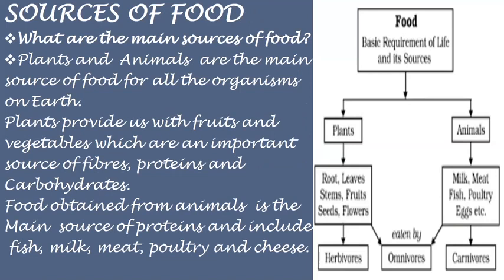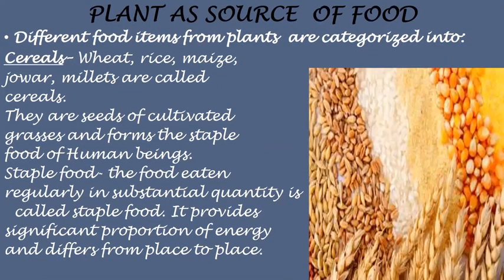What are the main sources of food? Plants and animals are the main sources of food for all organisms on the earth. Plants provide us with fruits and vegetables, which are an important source of fibers, proteins, and carbohydrates. Food obtained from animals is the main source of proteins and includes fish, milk, meat, poultry, cheese, etc. Different food items from plants are categorized into cereals, pulses, fruits, oil, and spices.